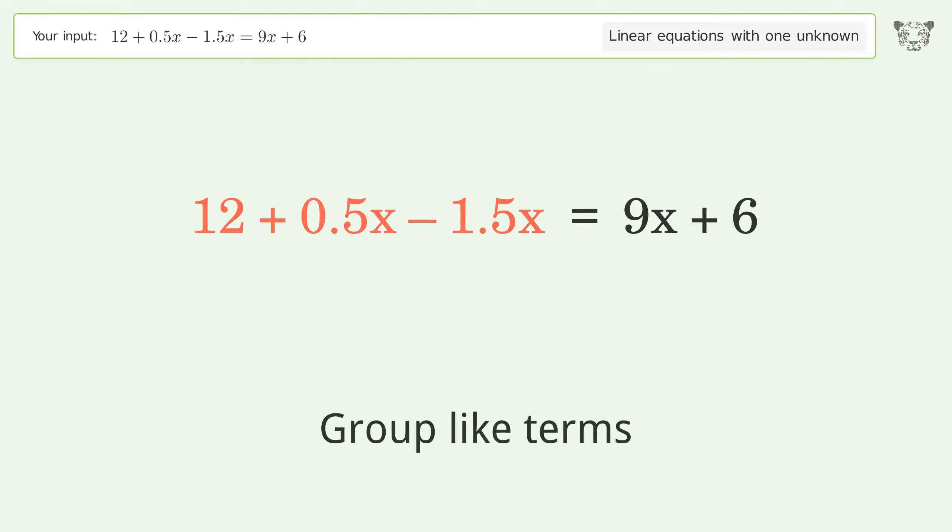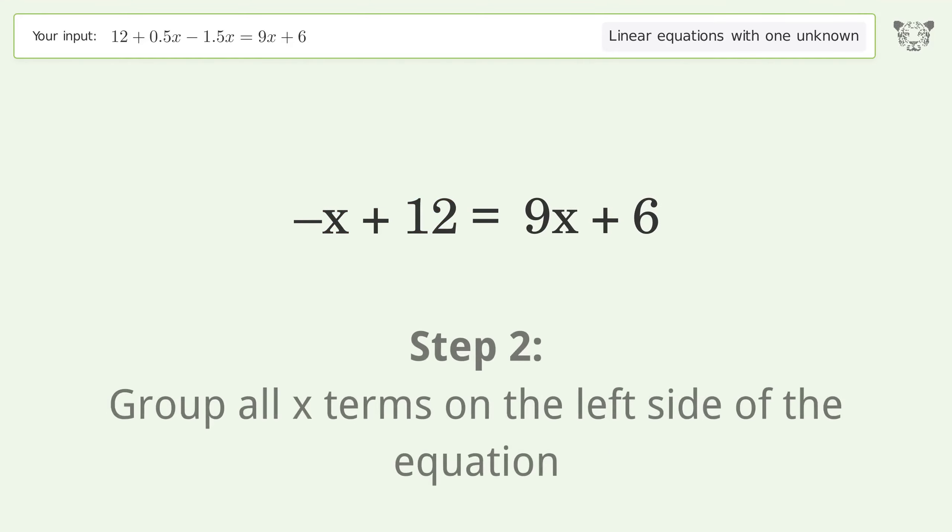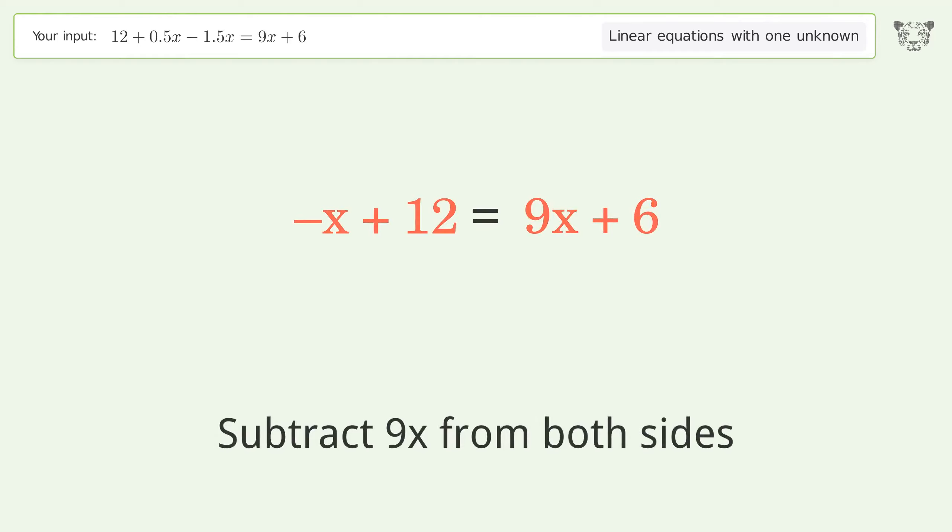Group like terms. Combine like terms. Group all x terms on the left side of the equation. Subtract 9x from both sides.